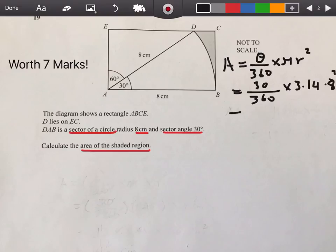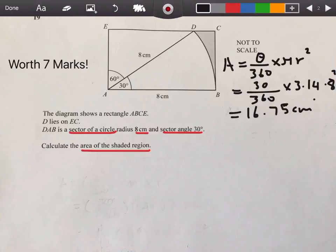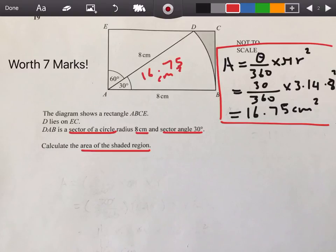When you put all this in your calculator, you should get a result of 16.75 cm². So that's our first part. We found the sector of a circle, 16.75 cm², this region here.